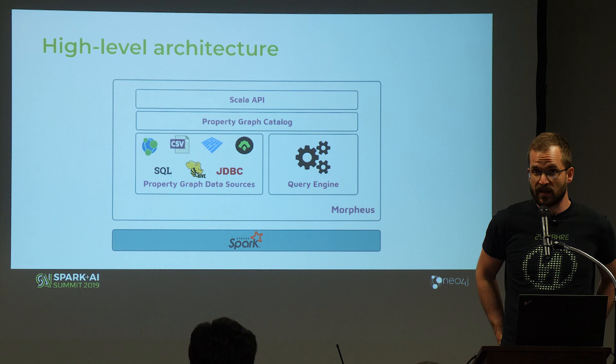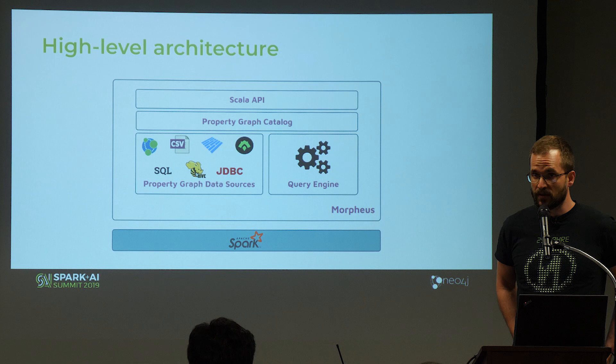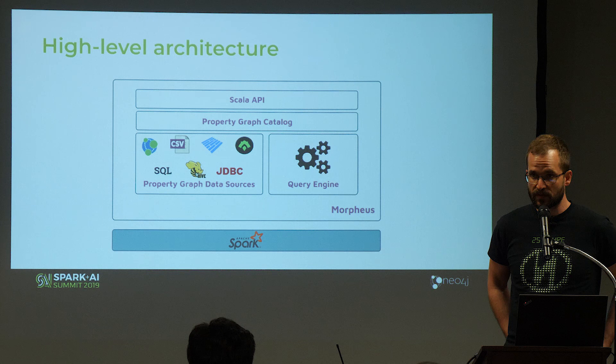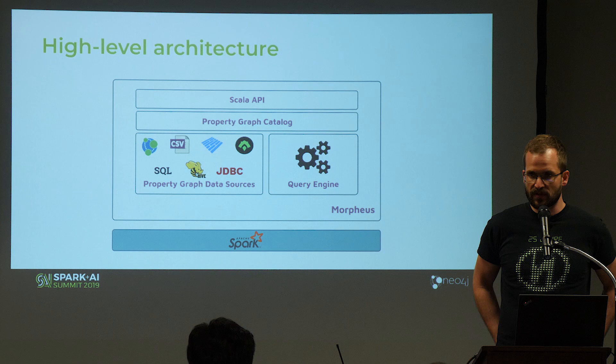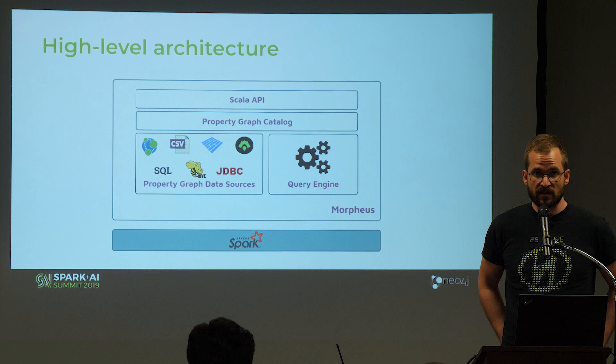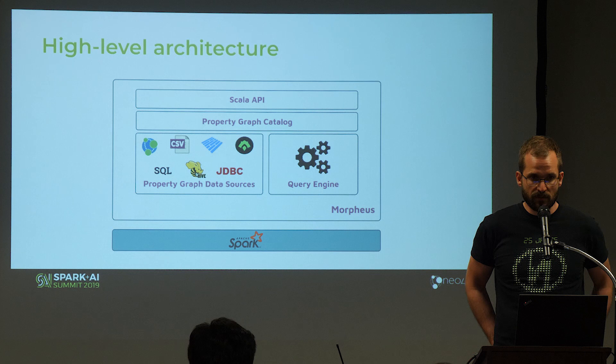Morpheus consists of four modules or components: the Scala API that you use to run Cypher on Spark; the property graph catalog, similar to the SQL catalog, which allows you to manage multiple graphs; the concept of property graph data sources that you use to connect to Neo4j, relational databases, Hive, or files; and the query engine that takes the Cypher query and translates it into Spark SQL API calls.